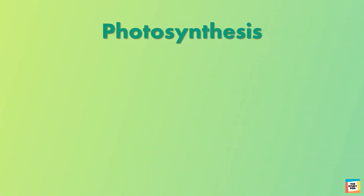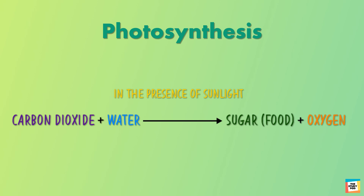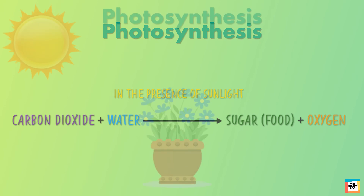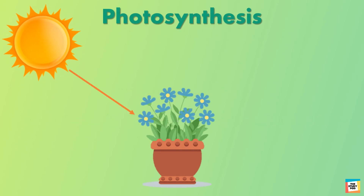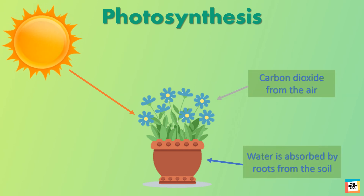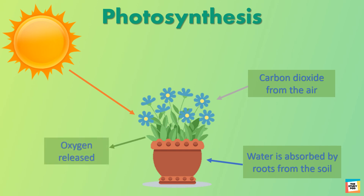Plants make their own food by a process called photosynthesis. It occurs in leaves. Plants need carbon dioxide, water, and sunlight to make their food, and they release oxygen. During photosynthesis, leaves use light energy from the sun, which is trapped by the chlorophyll, to combine carbon dioxide and water to make food. The food produced is in the form of sugar, and oxygen is given out in the process.